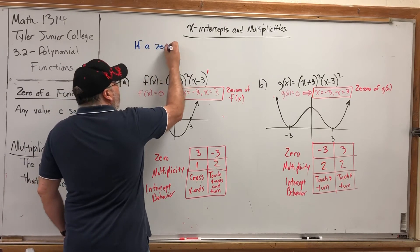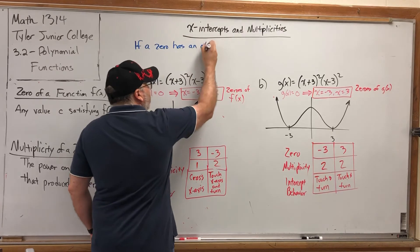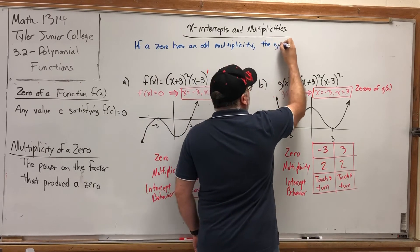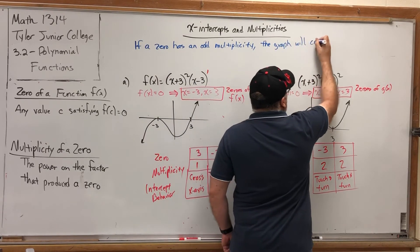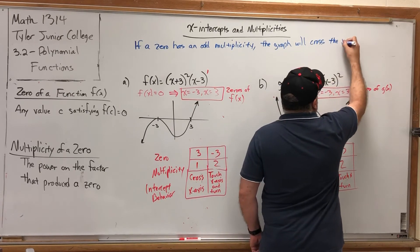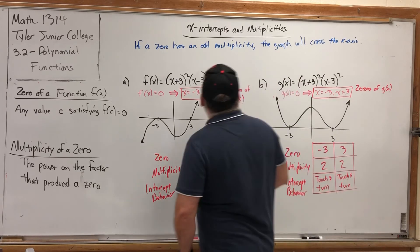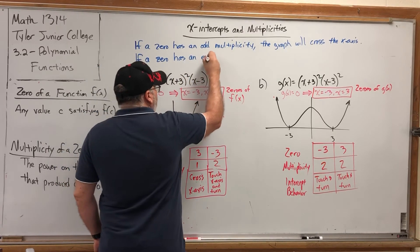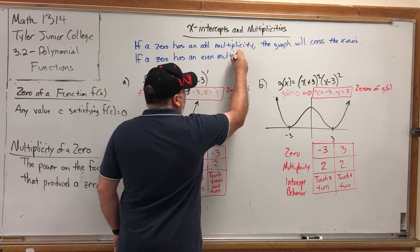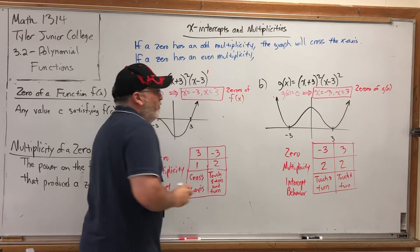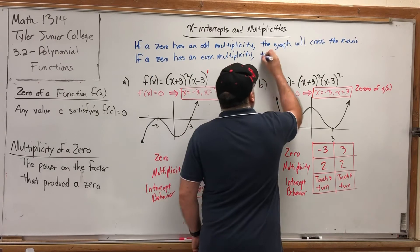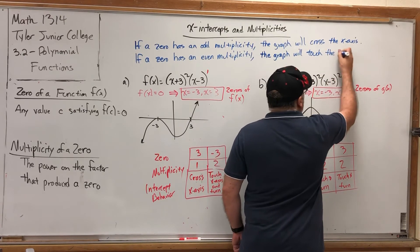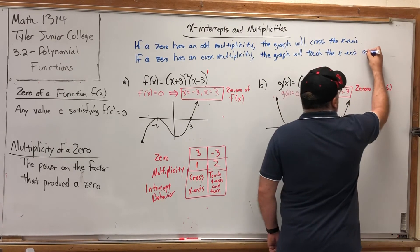If a zero has an odd multiplicity, the graph will cross the x-axis. If a zero has an even multiplicity, the graph will touch the x-axis and turn.